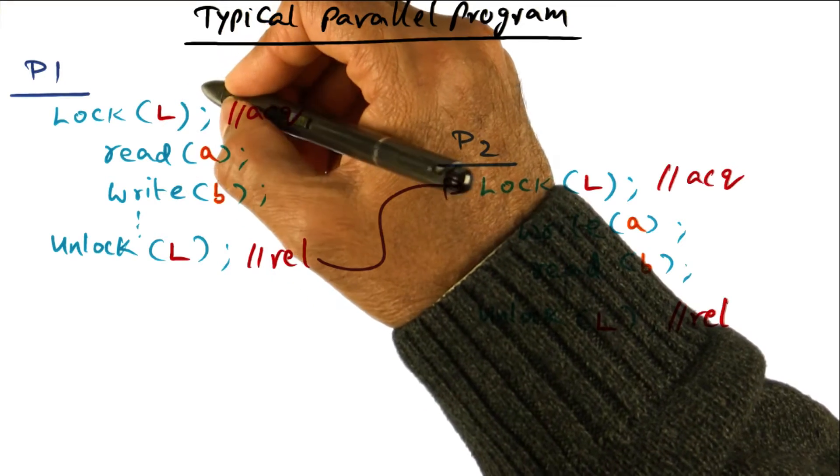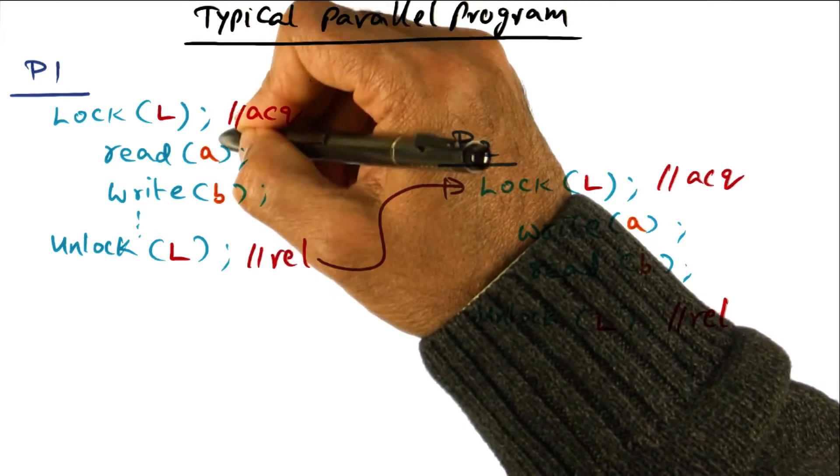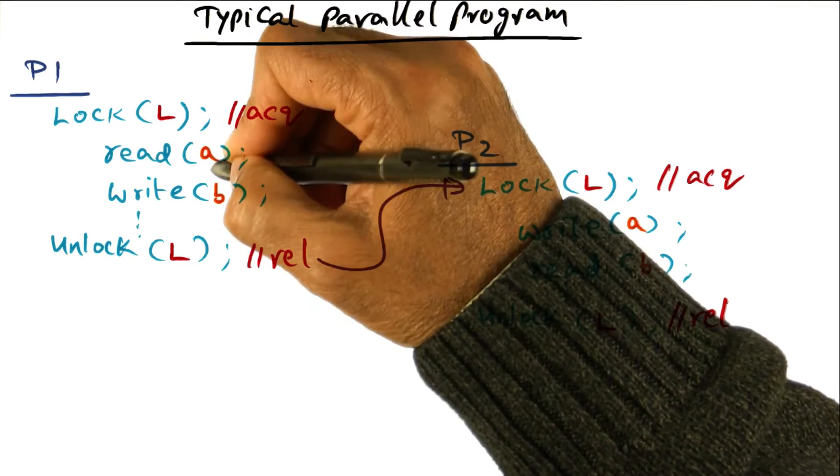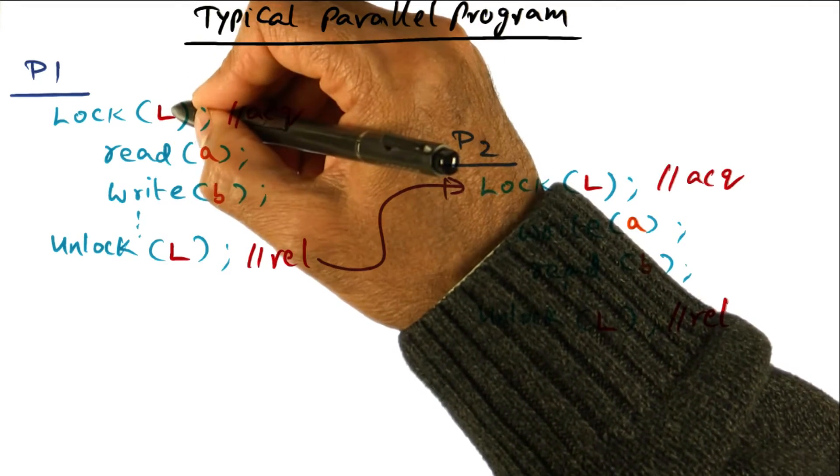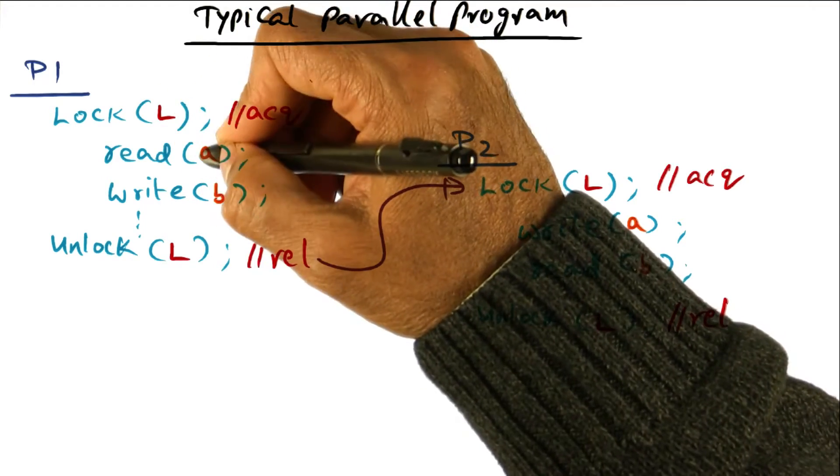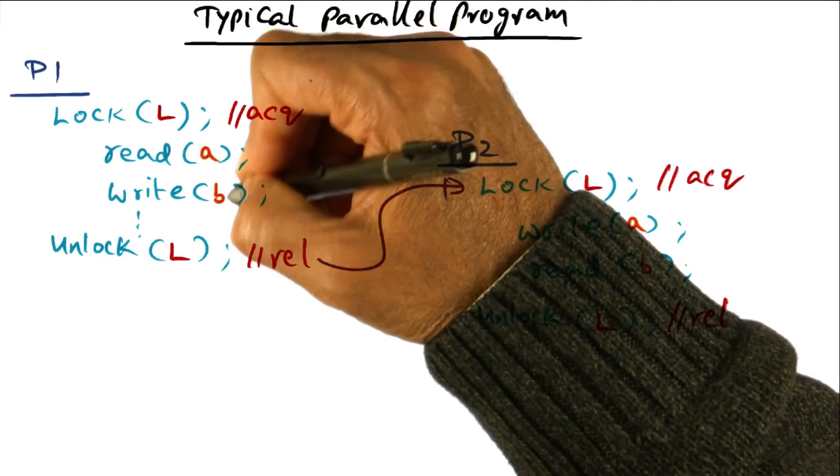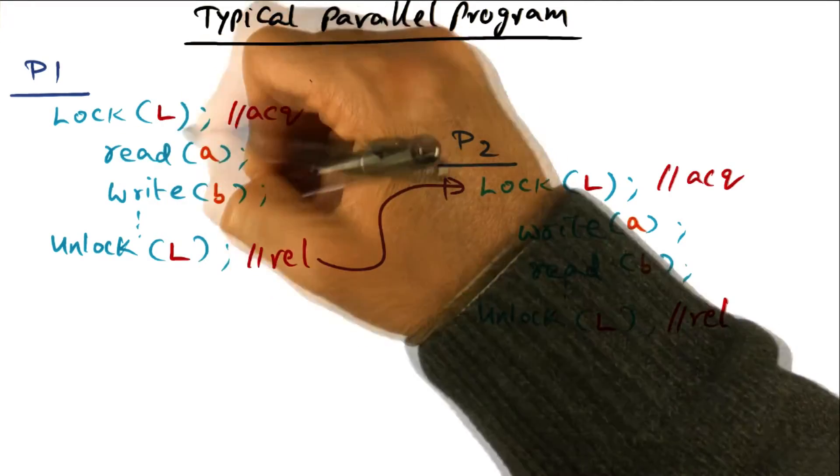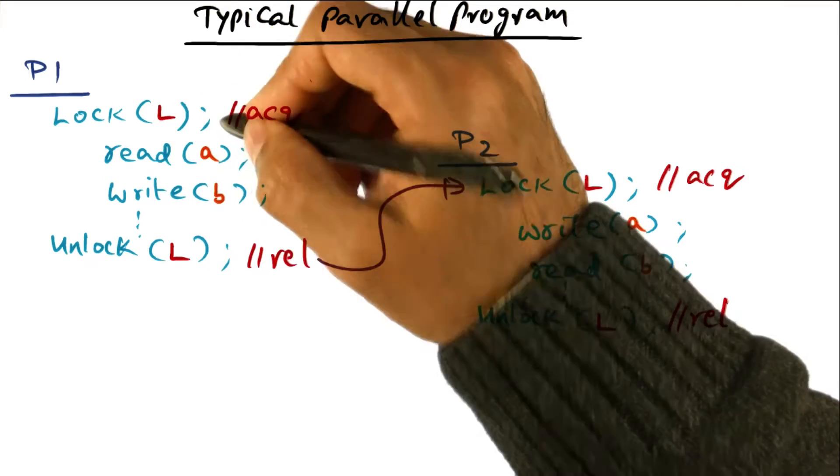Or in other words, in writing your parallel program, you decided that access to variables A and B are governed by this lock. So if I wanted to read or write variables A and B, I'll get a lock, and then I will mess with the variables that are governed by this lock.